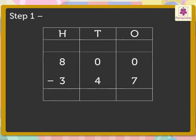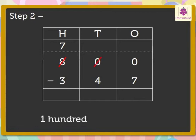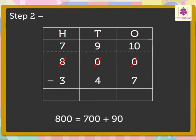Step 1: Write the numbers in the hundreds, tens, and ones columns. Step 2: Regroup hundreds, tens, and ones. So we regroup 8 hundreds as 7 hundreds plus 100. Now we regroup one hundred as 9 tens plus 1 ten. Lastly, we regroup one ten as ten ones. Thus, we get 800 is equal to 700 plus 90 plus 10.